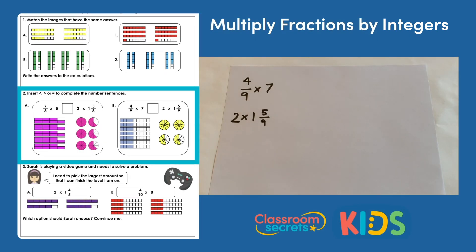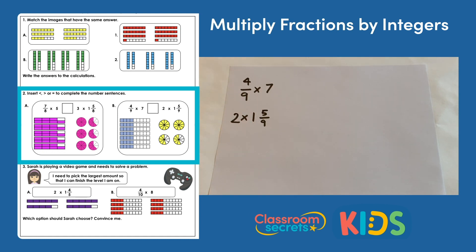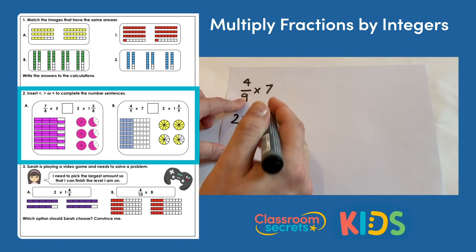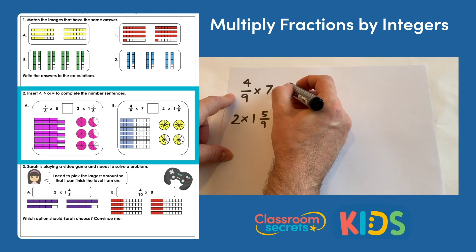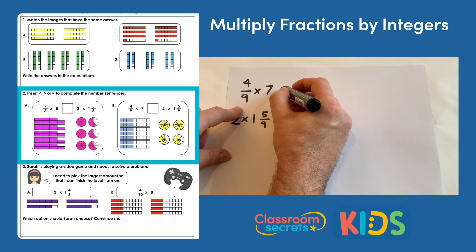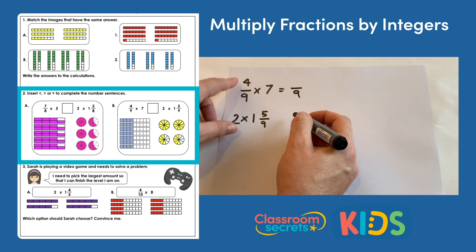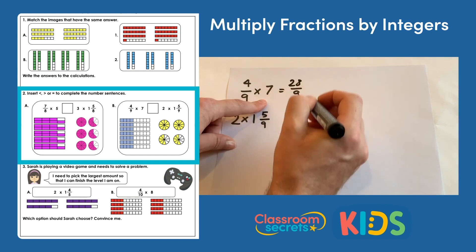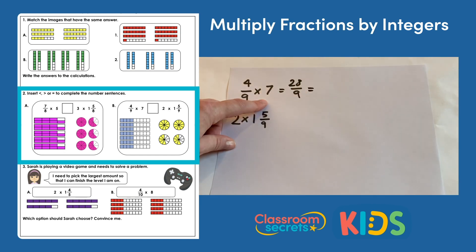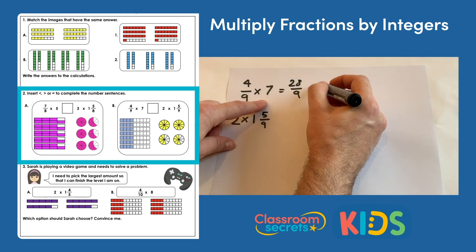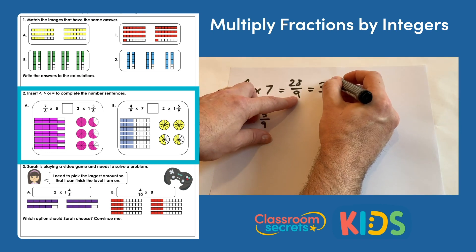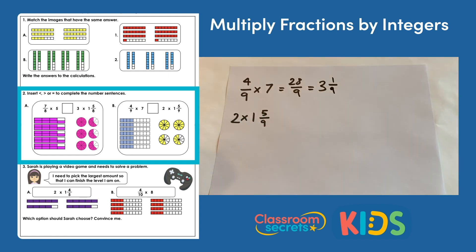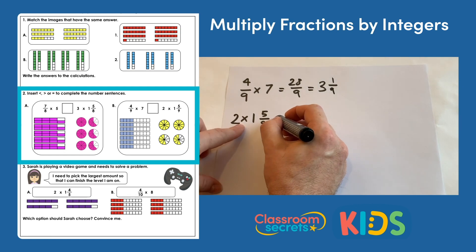For b, we have four ninths multiplied by seven, and two multiplied by one and five ninths. Starting with four ninths multiplied by seven — there are no whole numbers here, so it's just a fraction multiplied by an integer. The result will be in ninths: four multiplied by seven is twenty-eight ninths, which converts to three and one ninth.